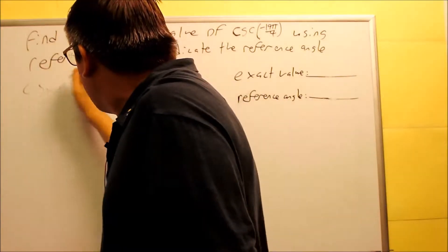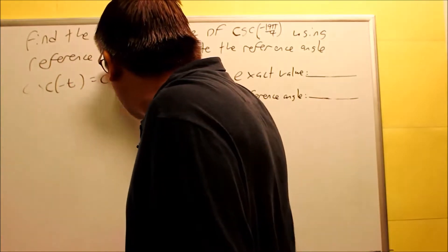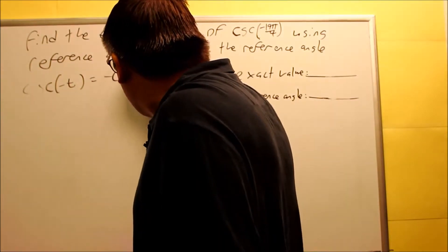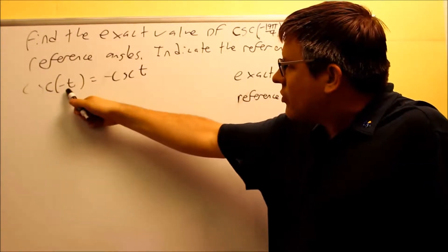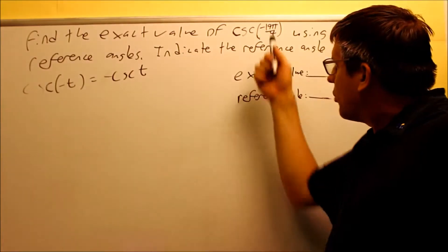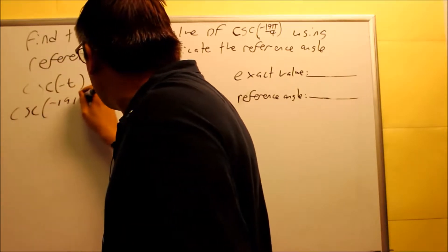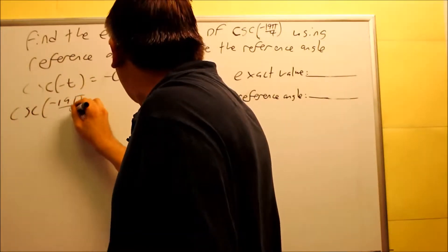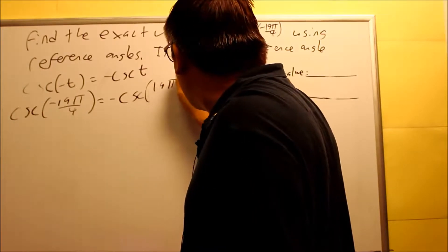I want to first rewrite this as a positive angle. So the formula I'm going to use for this one, this is our even odd property we talked about previously. Negative cosecant of negative t is equal to negative cosecant t. The negative is going to go on the outside. We'll apply that formula to this one. So cosecant negative 19π over 4 is equal to negative cosecant 19π over 4.